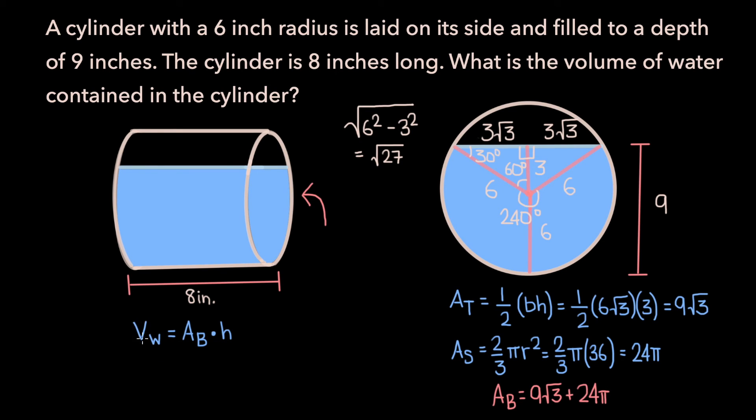Remember that the volume of the water is the area of the base times the height. So 9 root 3 plus 24 pi times the height, which we established was 8 inches. And so the volume of the water is 72 root 3 plus 192 pi inches cubed. And that's all there is to this problem.